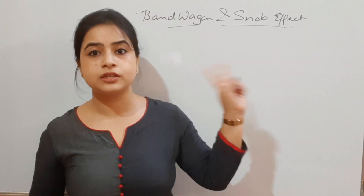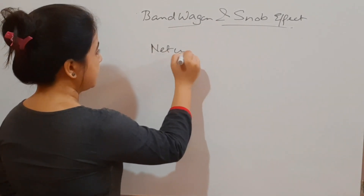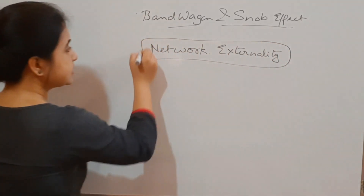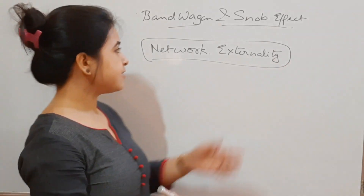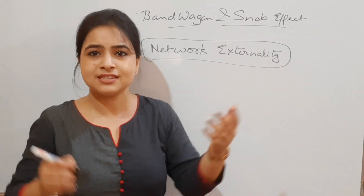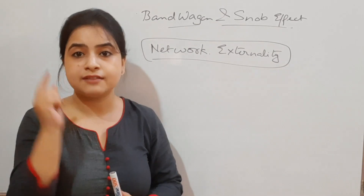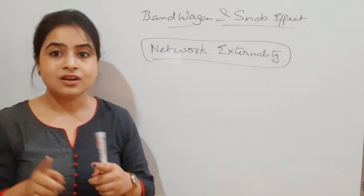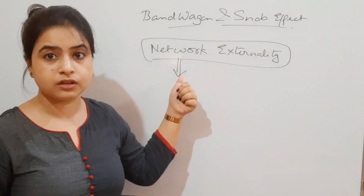Whenever we talk about the Bandwagon Effect and the Snob Effect, the one key term you need to remember is network externality. Most of us have learned about externality — positive externality, negative externality. So what is network externality? The term is quite self-explanatory. 'Network' means connectivity. Network externality is understood through that word: network.